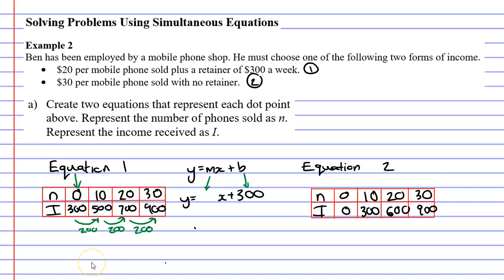So if they were going up by 1, let's say we had n and then we get 0, 1, 2, 3. What would we get for our income? Well, under 0, we know it's 300. If we only sold one phone, that's $20 plus the retainer. That would be 320. And the next one, if we sold two phones, that'd be 340. And if we sold three phones, it'd be 360. So we can see that this one is going up by 20s. And that is what our gradient is. It's 20. So we'll put that here.